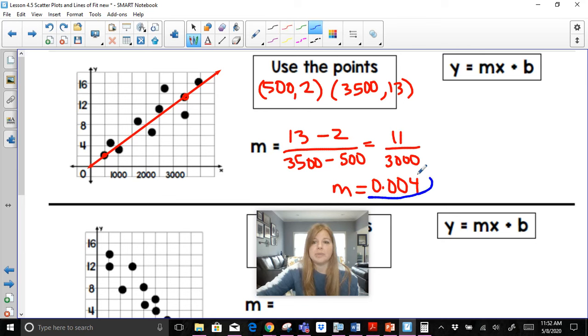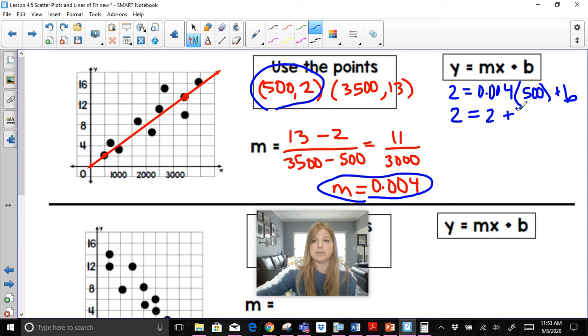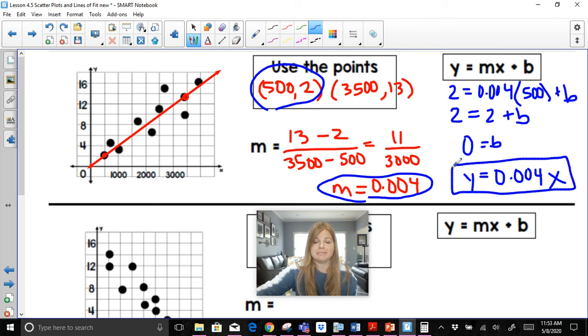So now I'm going to take the slope, and I can technically take either ordered pair. I'm just going to use the first one to solve for B. So 2 is equal to 0.004 times my X value of 500 plus B. So now I'm going to take my calculator. I'm going to do 0.004 times 500, and I get 2. So this becomes 2 equals 2 plus B. Subtract 2 on both sides. B is equal to 0. So my equation is Y equals 0.004 X. Awesome.